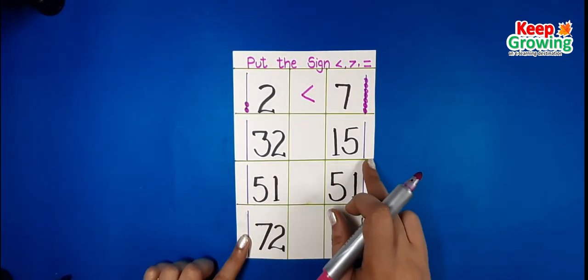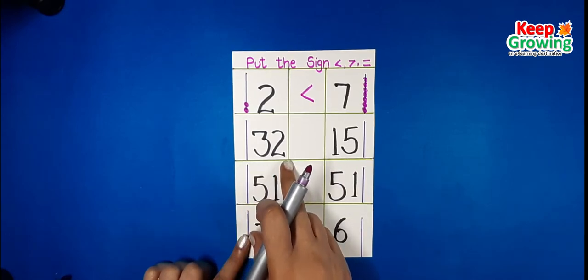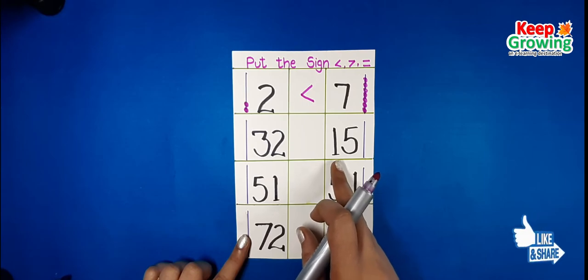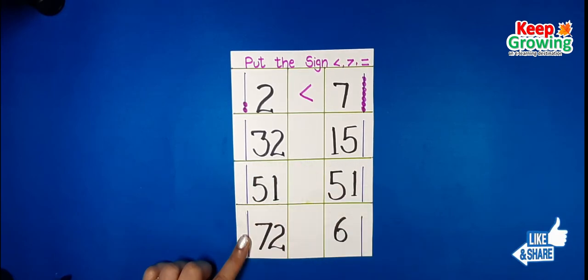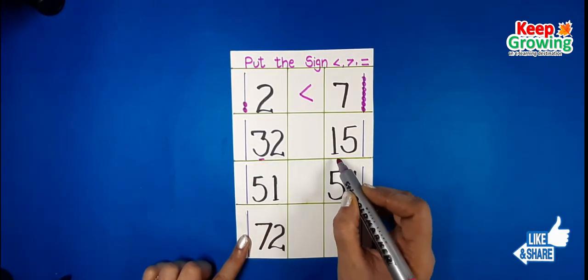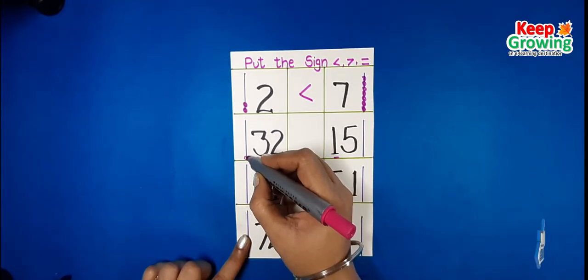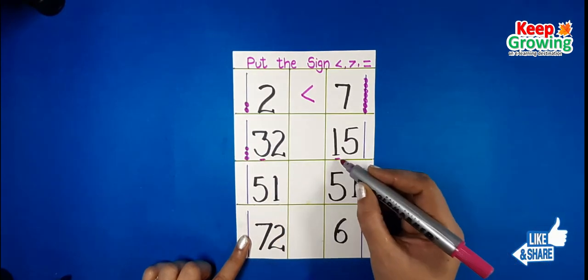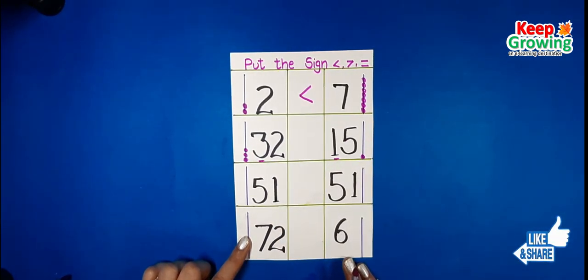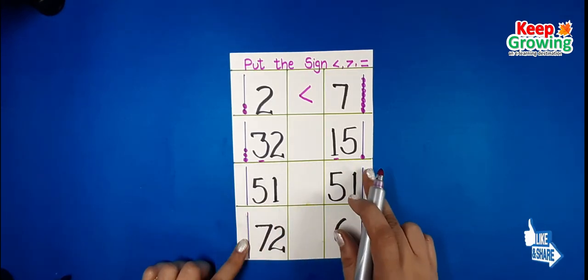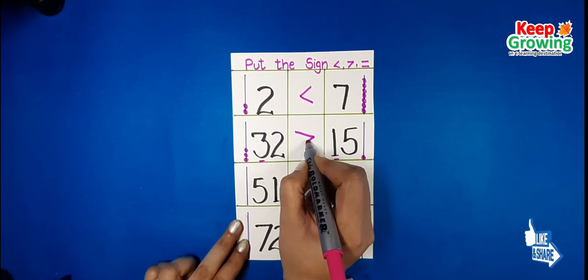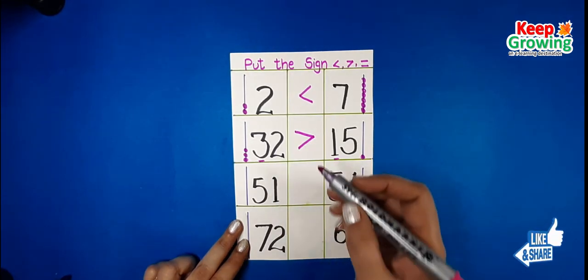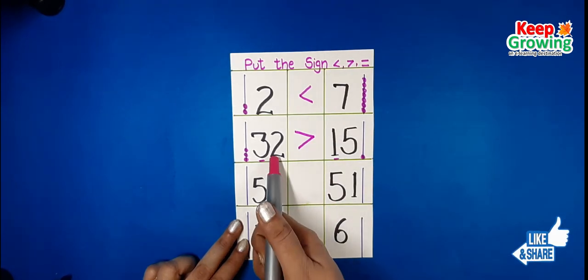Now we have a two-digit number. We always read the number from left to right. Number 32 and number 15 — we compare the tens place digit of both the numbers. We compare number 3 to number 1. Number 3 has 3 beads and number 1 has 1 bead. We can observe that number 3 has more beads than number 1. It means number 32 is the bigger number, so Ali the alligator eats number 32. The open mouth of the alligator is always towards the bigger number.